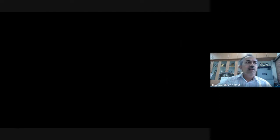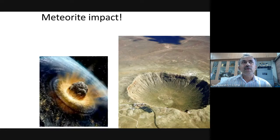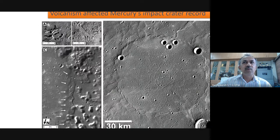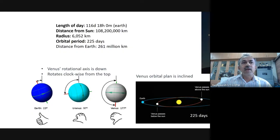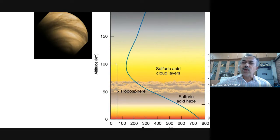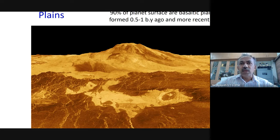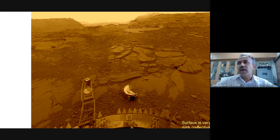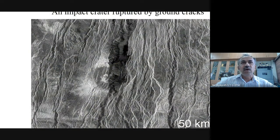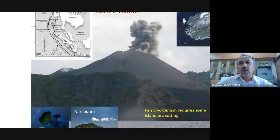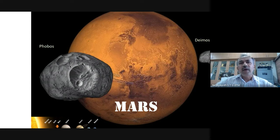I've shown you interesting photographs of Mercury — the impact craters, the magnetic field. Venus also has very high temperatures compared to Mercury; it is the hottest planet because of carbon dioxide and sulfuric acid cloud layers. It also contains basaltic plains and volcanic features. Earth of course I have shown you, and we will discuss in great detail. Now when it comes to Mars, it is a very well-understood planet in our solar system.